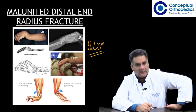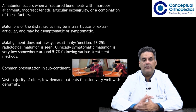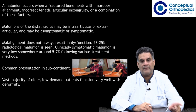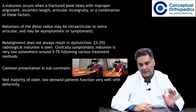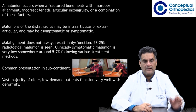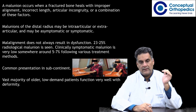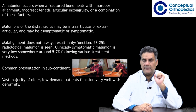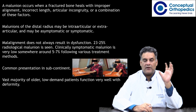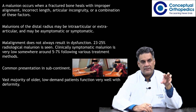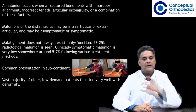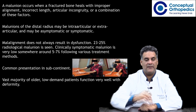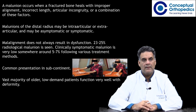A malunion occurs when a fractured bone heals with improper alignment. There are three things to remember in distal radial anatomy: the height, the inclination, and the tilt. The radial height is the difference between the radial styloid and the ulnar styloid, which is normally 11 millimeters.